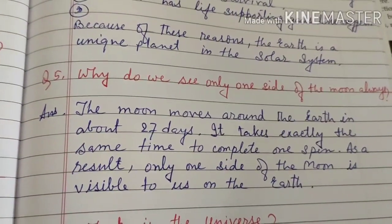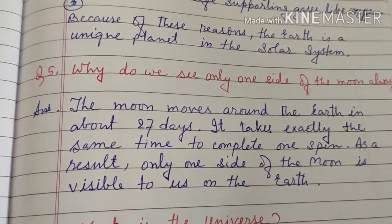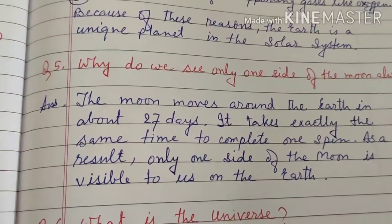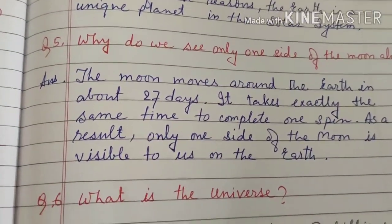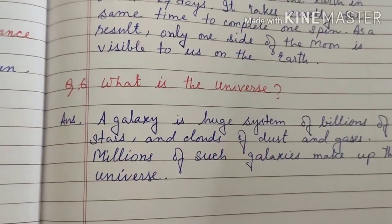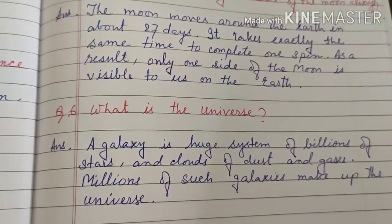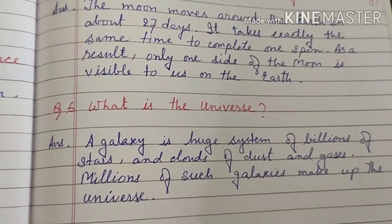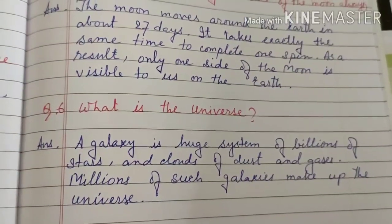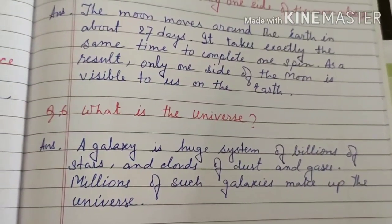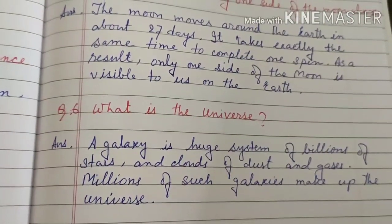Why do we see only one side of the Moon always? The Moon moves around the Earth in about 27 days, which is exactly the same time it takes to complete one spin on its own axis. As a result, only one side of the Moon is visible to us. What is the universe? A galaxy is a huge system of billions of stars and clouds of dust and gases; millions of such galaxies make up the universe.